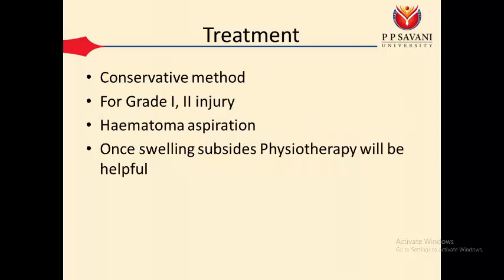Treatment depends on the level of injury — whether it is grade one, two, or three. For grade one and two injuries, aspiration of the knee joint is done to reduce swelling, followed by immobilization for a few days, and then physiotherapy is started. Physiotherapy plays a very important role in ligament injuries because proprioceptors are located on the ligaments. Ligament injury reduces proprioceptive feedback, increasing the chance of recurrence, so balance training and strength training are essential to increase knee joint stability.